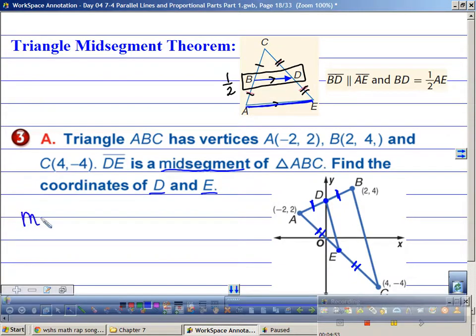I have an easy way to remember midpoint. The midpoint is the average of what? The average of two coordinates. What do we normally do when we have averages? We add them together and divide by two. The average of my x's, my x's are negative two and two. And my average of my y's, I look at my y's, I have two and four.